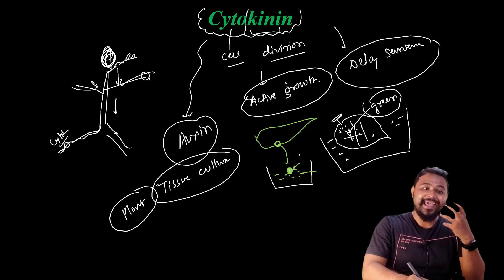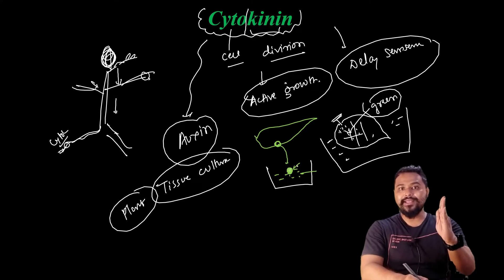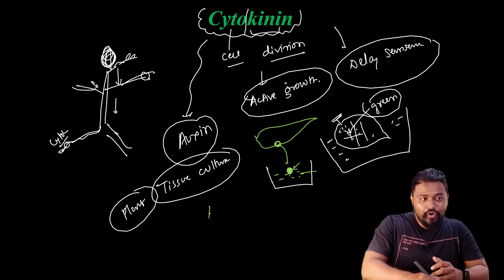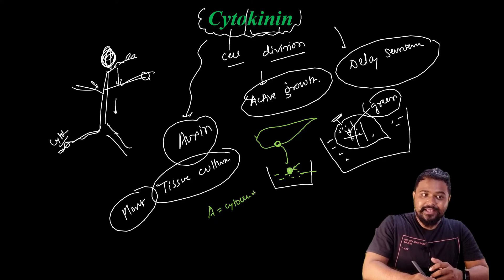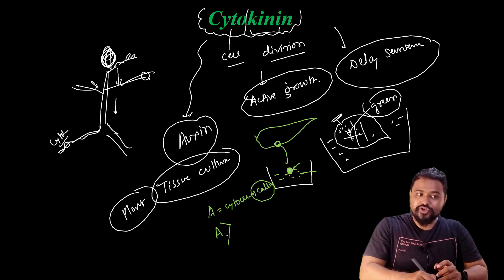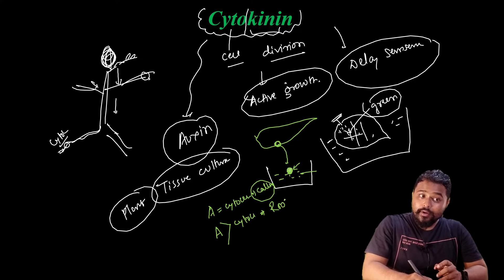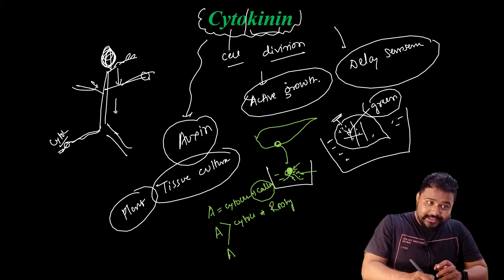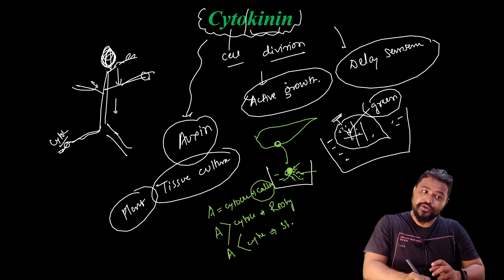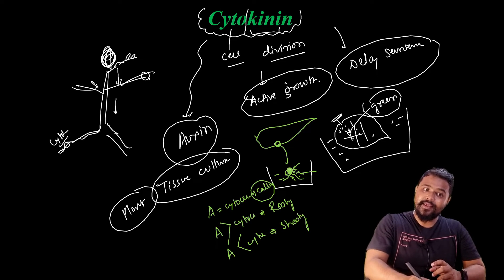I will tell you that when cytokinin and auxin hormone concentrations are equal, what happens to the cellular development? The cellular concentration determines what develops — the root. When auxin and cytokinin concentrations are compared, the ratio determines whether roots or shoots develop.